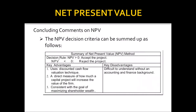Concluding comments on net present value: accept if NPV is greater than zero, reject if less than zero, indifferent if equal to zero. Key advantages: it uses discounted cash flow valuation incorporating time value of money, it is a direct measure of how much a project increases firm value, and it is consistent with maximizing shareholder wealth. The key disadvantage is that it is difficult to understand without an accounting and finance background. When in doubt — especially with mutually exclusive projects — net present value is the preferred method.